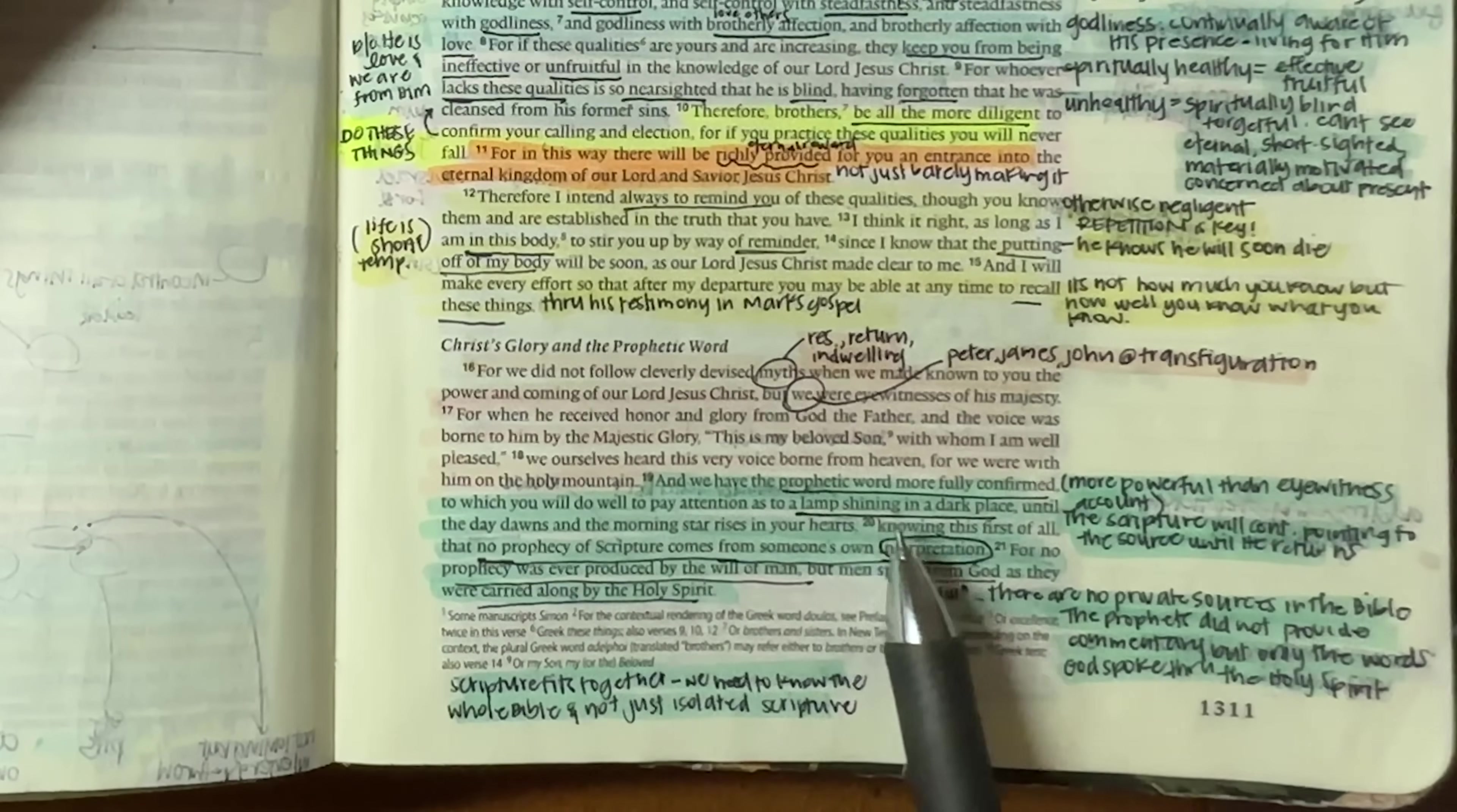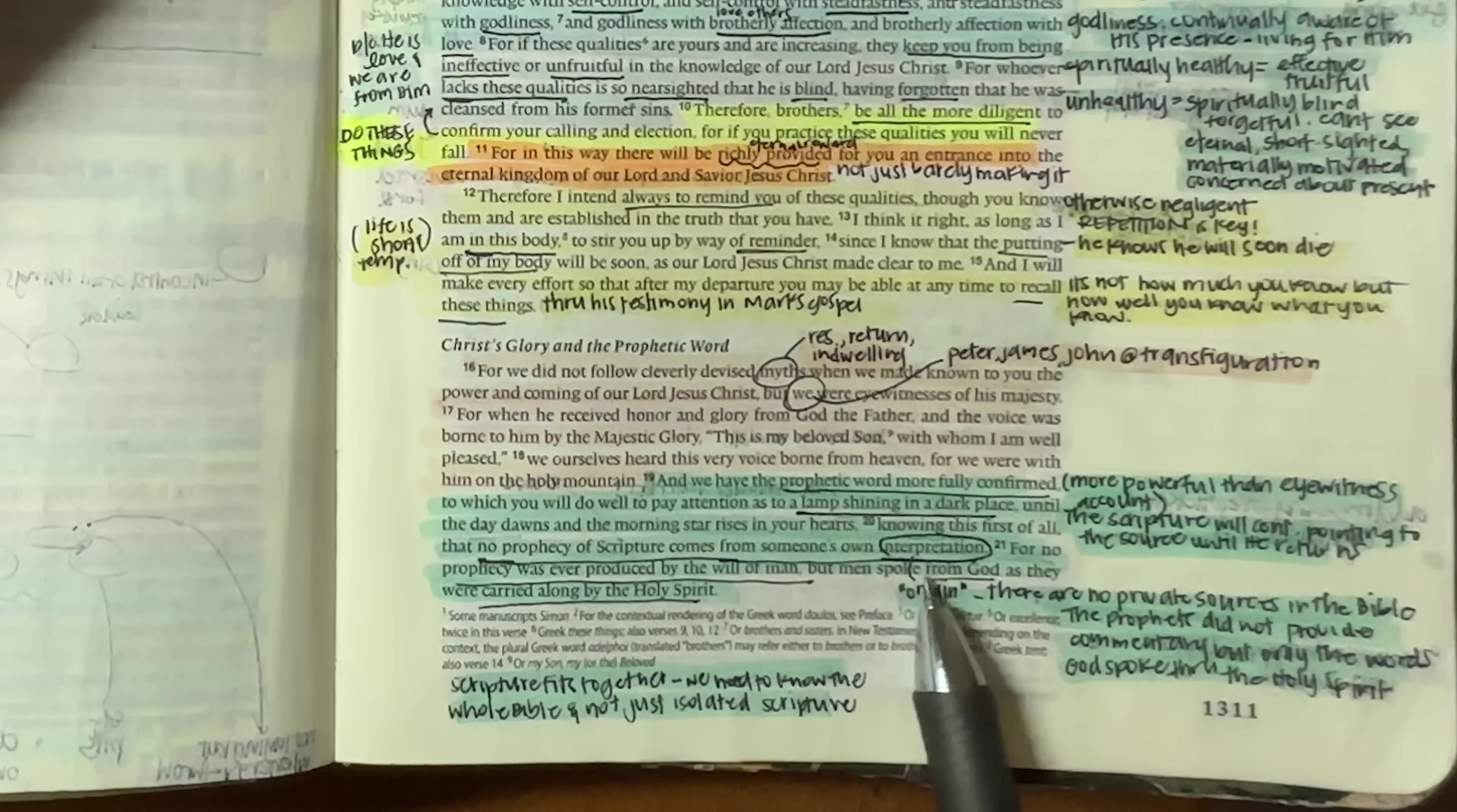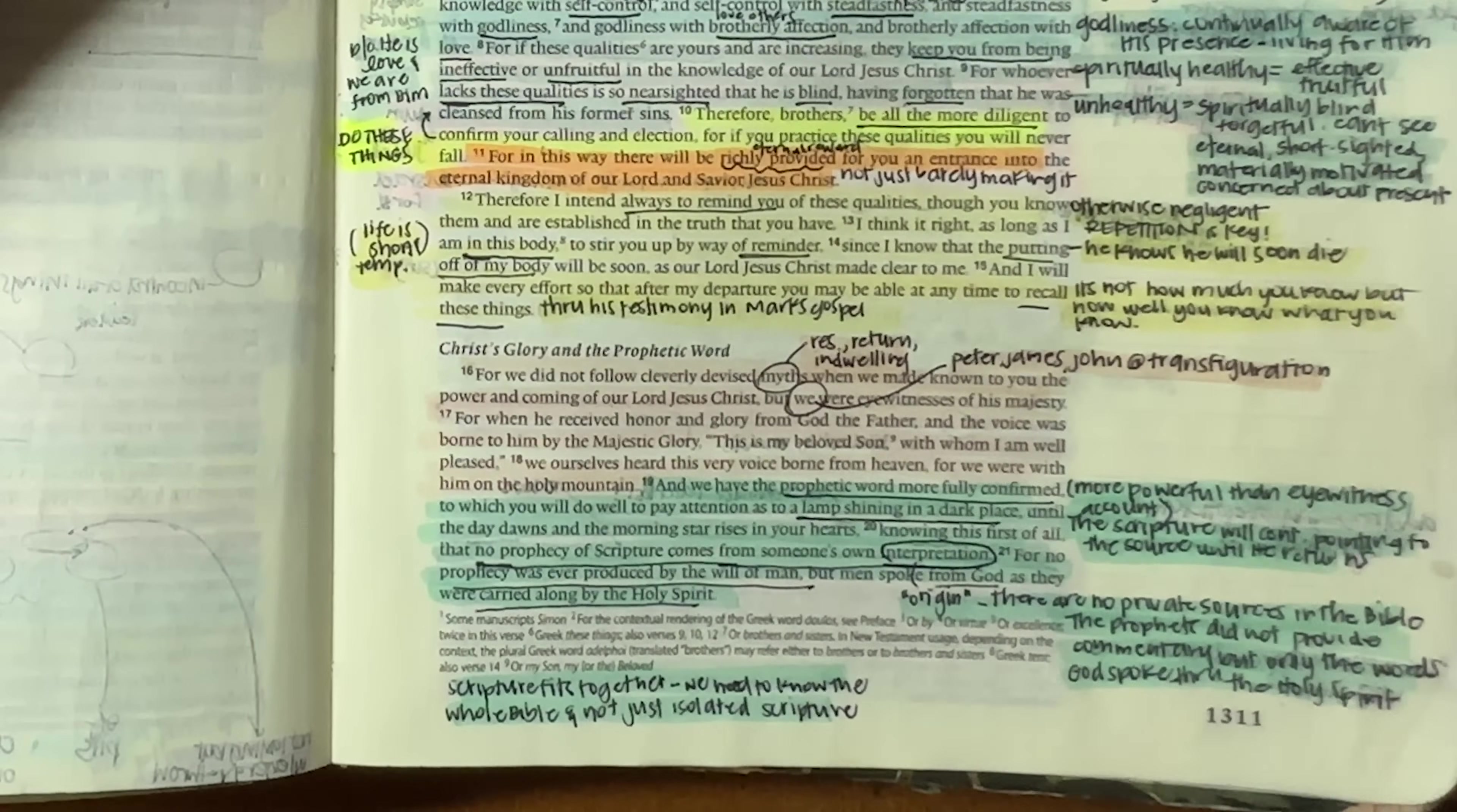And we have the prophetic word more fully confirmed to which you will do well to pay attention as to a lamp shining in a dark place until the day dawns and the morning star rises in your hearts. Knowing this, first of all, that no prophecy of scripture comes from someone else's or someone's own interpretation. So he's saying in light of the fact that we were eyewitnesses, let me give you something even more powerful. It was the fulfilling of the prophetic and it will be the word of God, this lamp shining in a dark place that will continue to point you to the source of the truth until he comes back, until he returns.